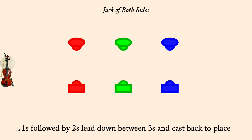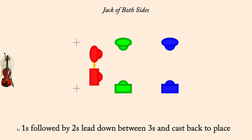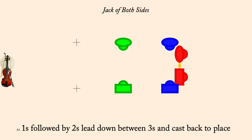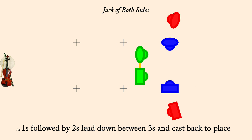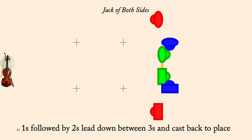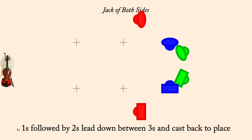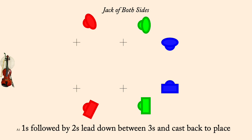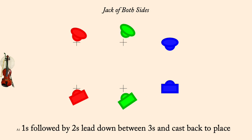Ones followed by twos lead below threes and cast back to places. Partner set and turn single.